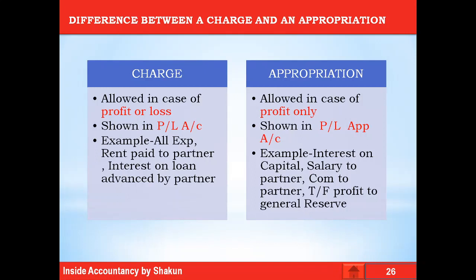Appropriation, on the other hand, is allowed only in case of profits. These appropriations are shown in the profit and loss appropriation account. For example, interest on capital to be given to a partner will be given only if the firm earns profits. Similarly, salary to a partner or commission to a partner will also be allowed only in case of profits. Transfer of profit to general reserve will also be given only in case of profits. So, appropriation is allowed only in case of profits; if there are losses, such appropriations are not allowed.